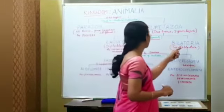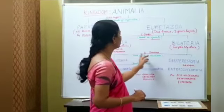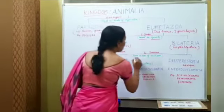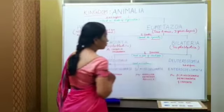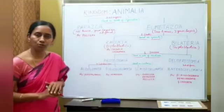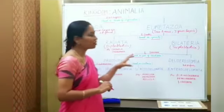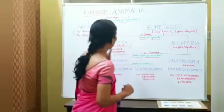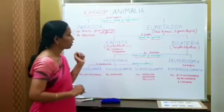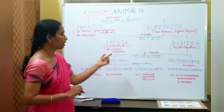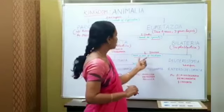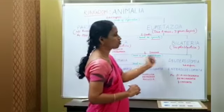Bilateria is again divided into two divisions based on the fate of the blastopore. The fate of the blastopore is a major characteristic feature in classification. During the development of the gastrula, there is a blastopore.